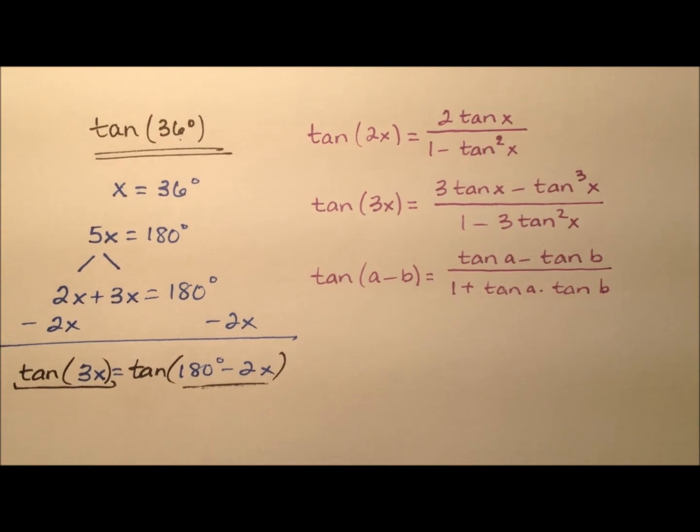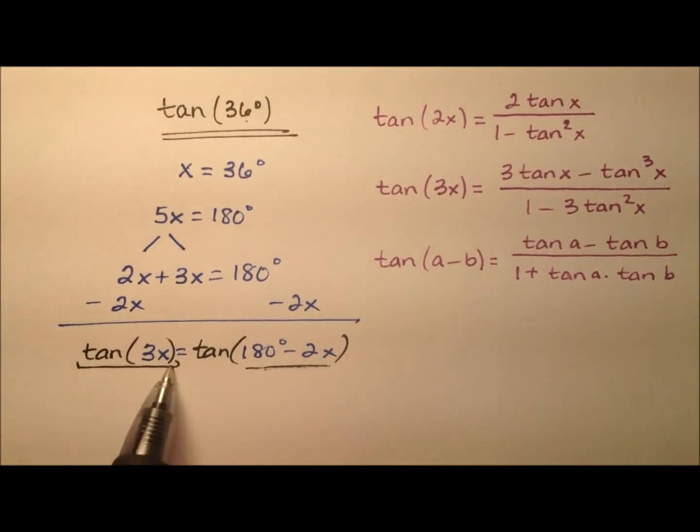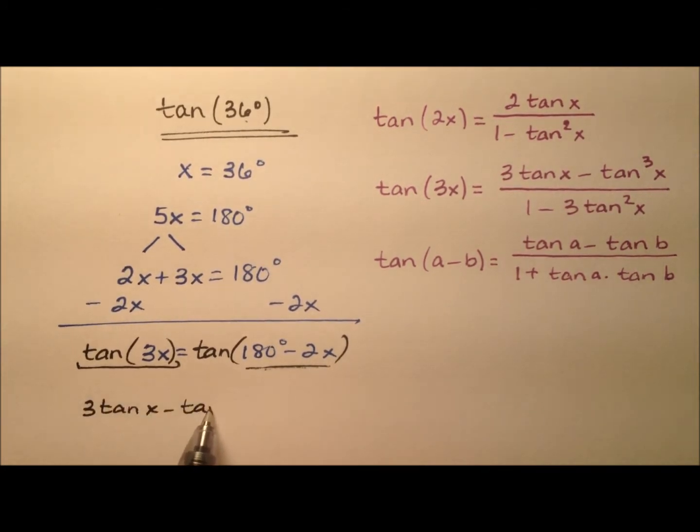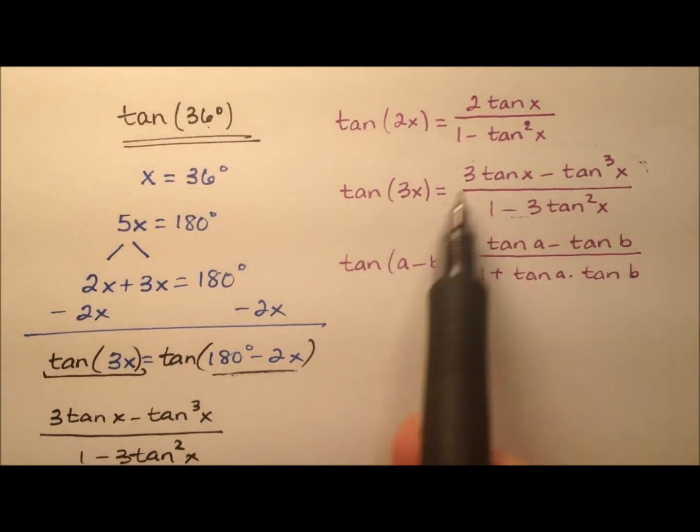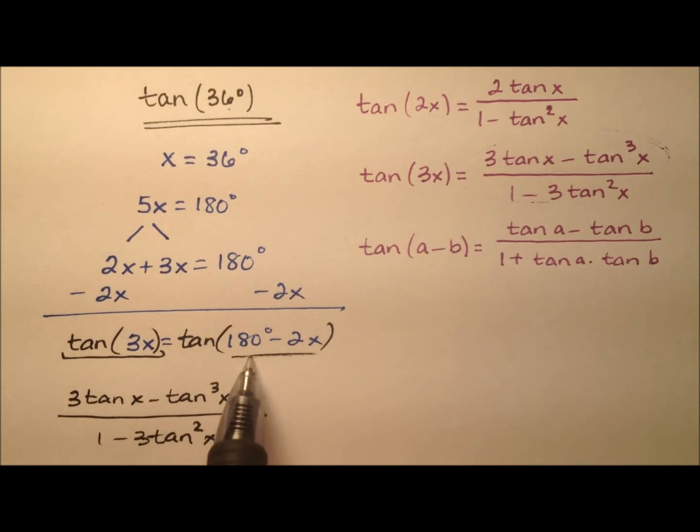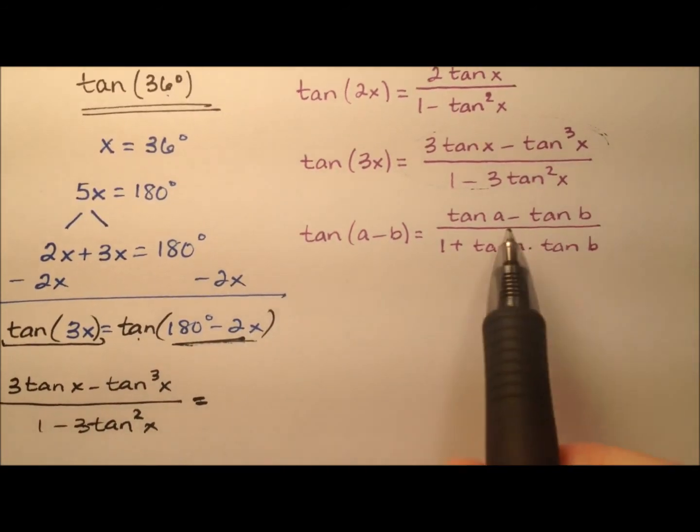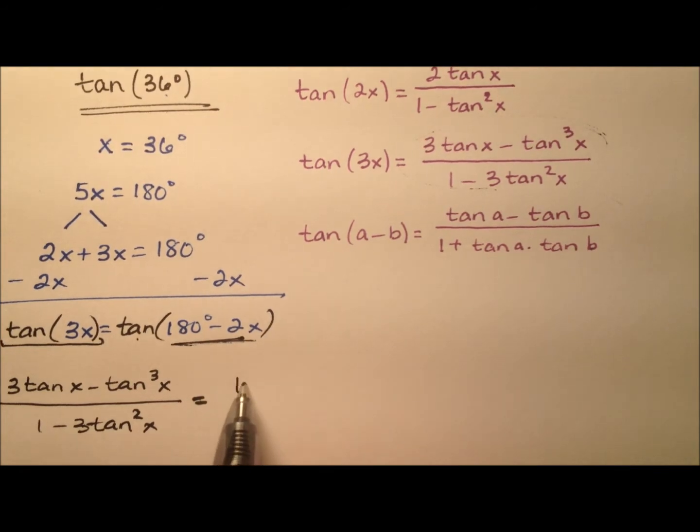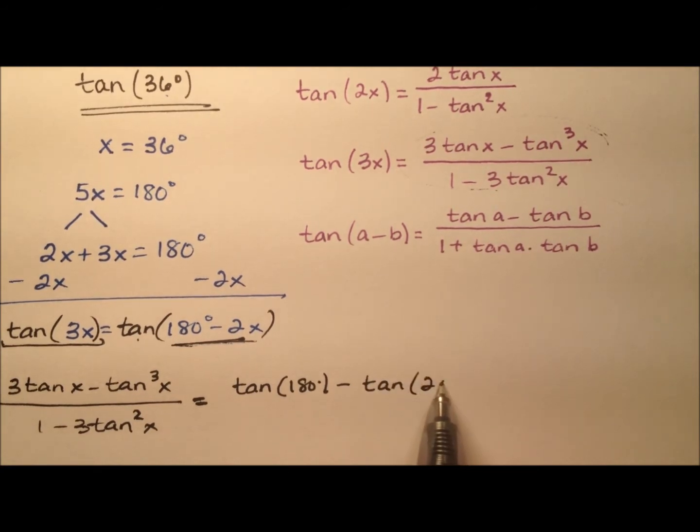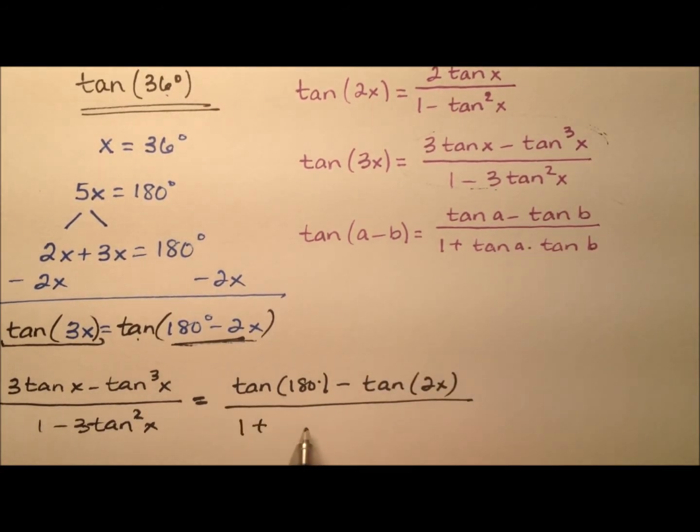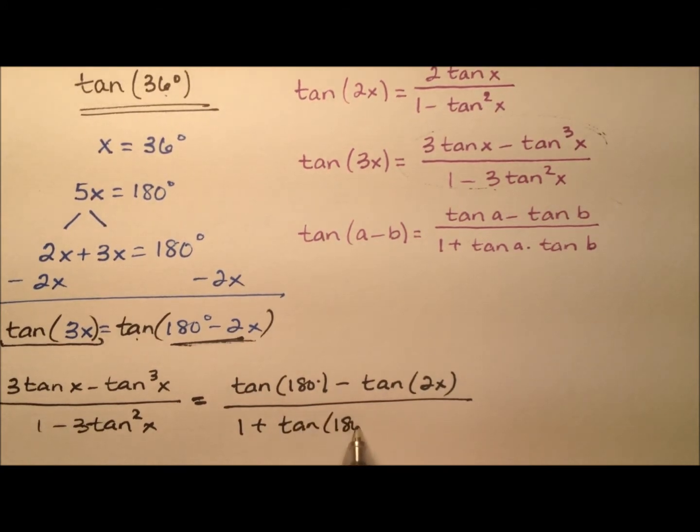So I'm going to use these identities and expand this equation. So this tangent 3x will become 3 tangent x minus tangent cubed x all over 1 minus 3 tangent squared x. And of course, that just came from this identity here. And the next one will be this difference identity for tangent. So we're going to say the tangent of 180 degrees minus the tangent of 2x all over 1 plus the tangent of that 180 degrees times the tangent of 2x.